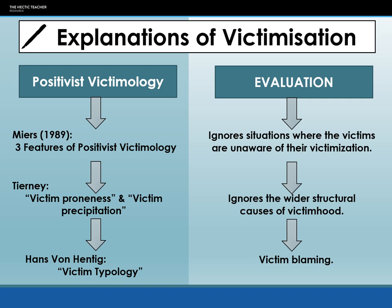To summarise: victimology looks at trends in victimisation across age, class, gender, ethnicity and sexuality, and examines theories of victimisation in terms of positivist and critical or radical approaches. Positivist victimology is criticised for ignoring victims who don't know they're victims, ignoring wider structural causes, and being fundamentally victim-blaming — placing responsibility on the individual rather than acknowledging that structural factors like poverty prevent people from protecting themselves.